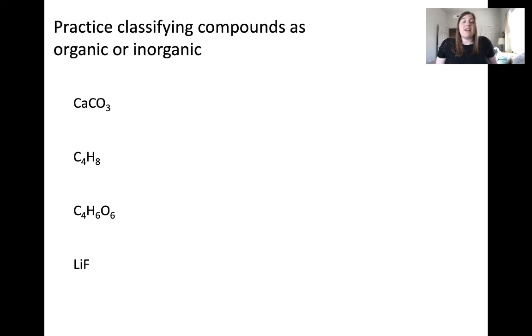Now let's practice classifying these compounds as organic or inorganic. The first compound is calcium carbonate. You'll notice it contains both a metal and a series of non-metals. This should clue you in that this is an ionic compound. The metal is the cation, Ca2+, and the non-metal collection is carbonate, CO3-.